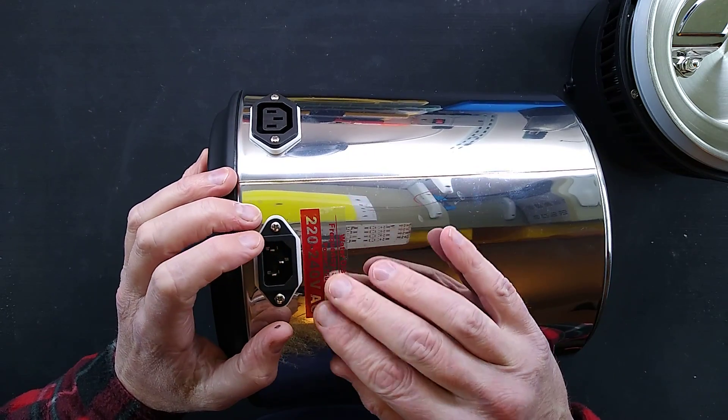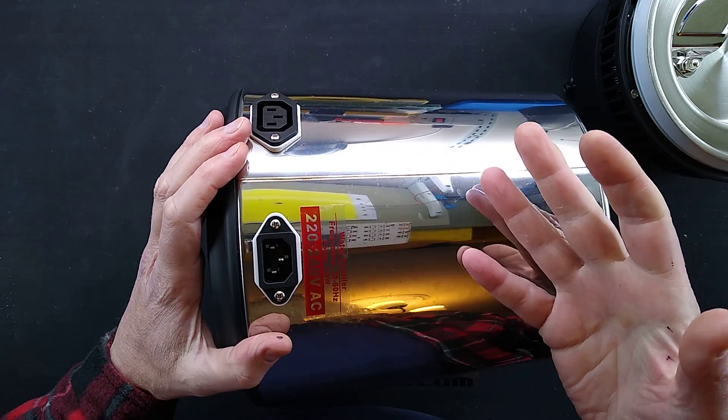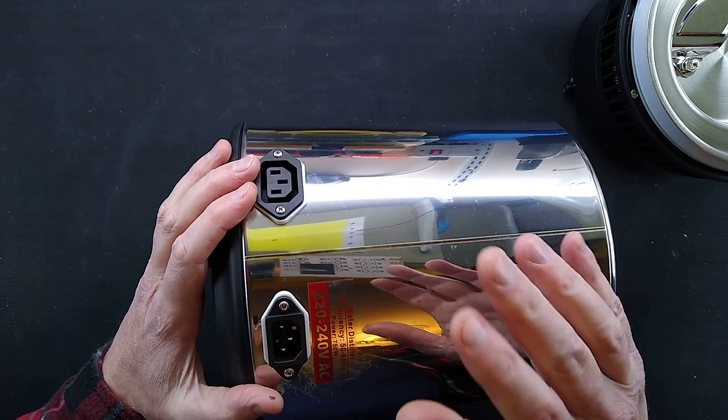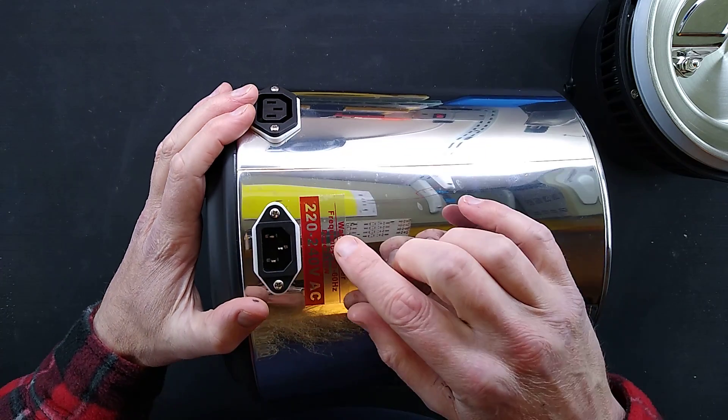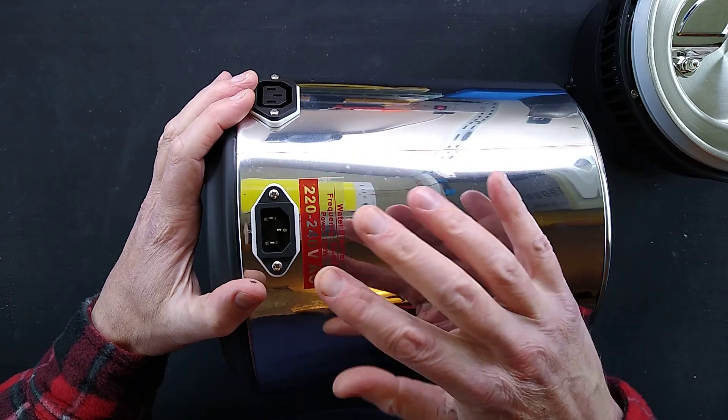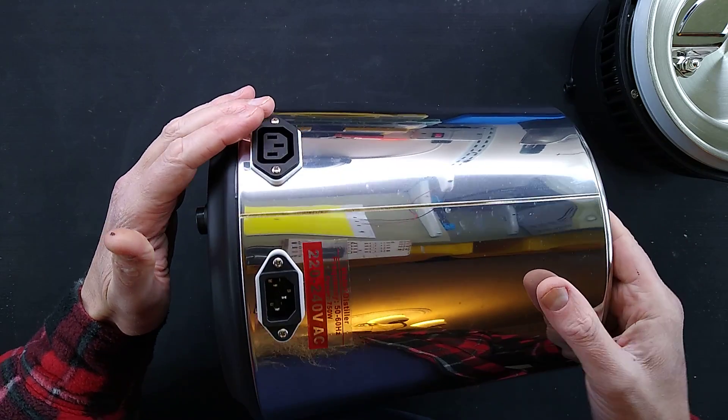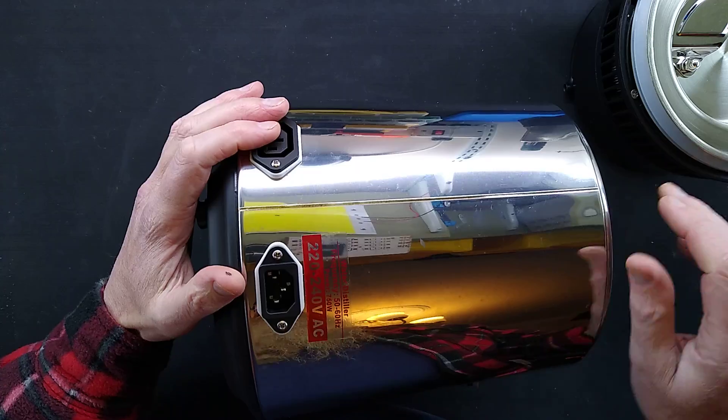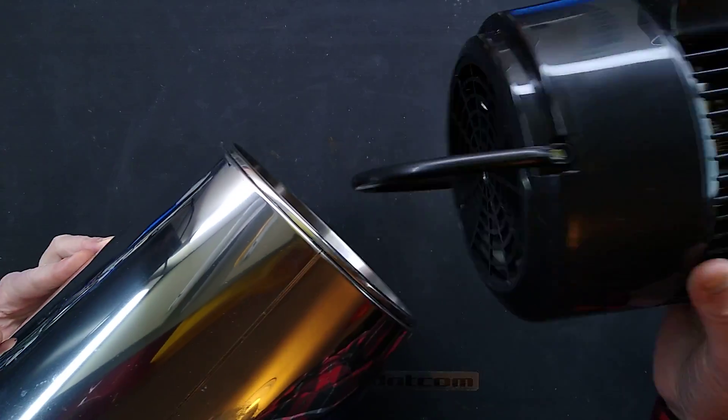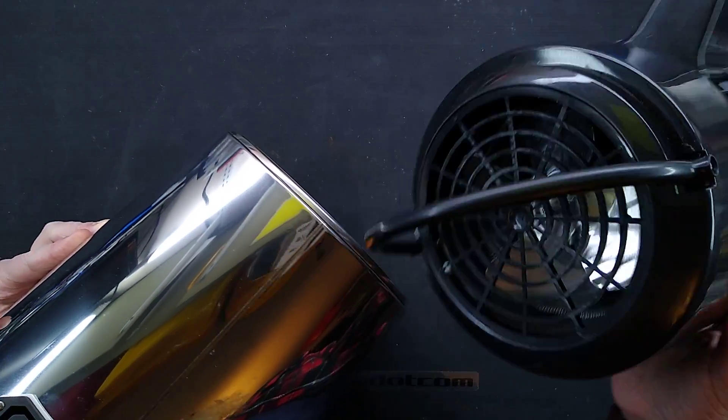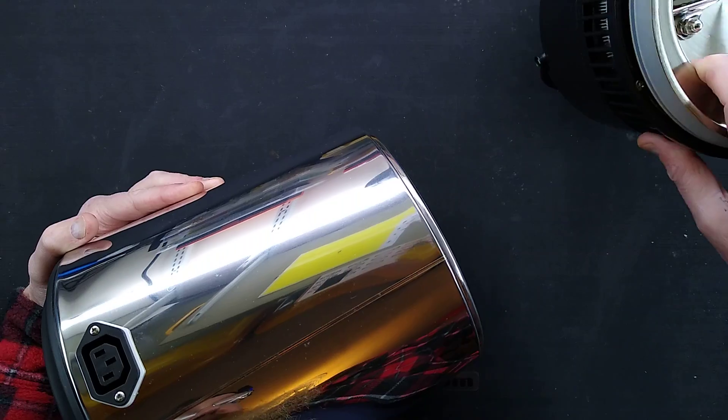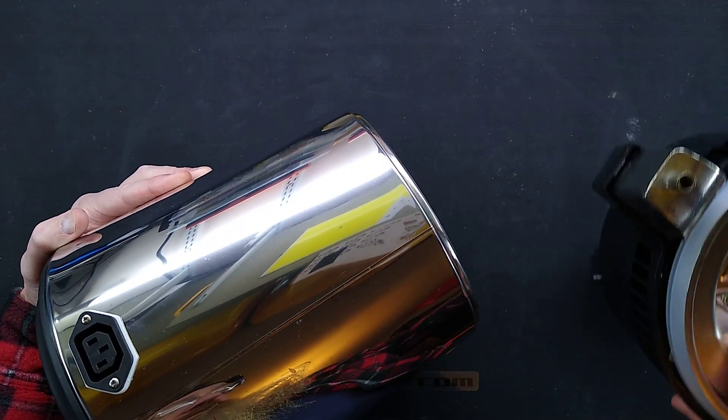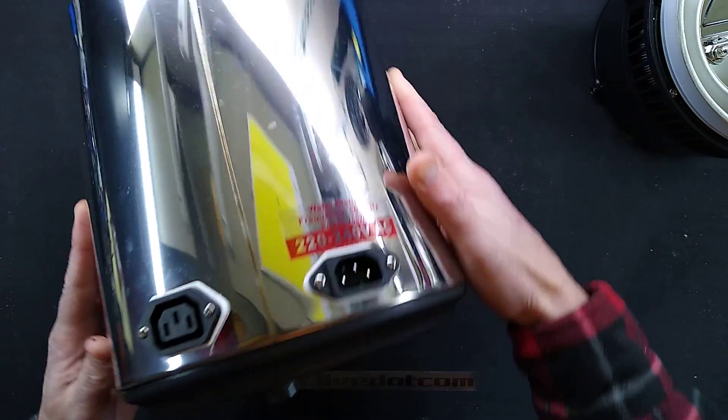It has a power inlet, an IEC connector. This thing is rated 750 watts, 220-240. You get them for whatever voltage is in your neighborhood. 750 watts in this case is great for water but not great for some other things. It also has an output which is used to power the fan in the top. You can see the fan blade sticking in there.